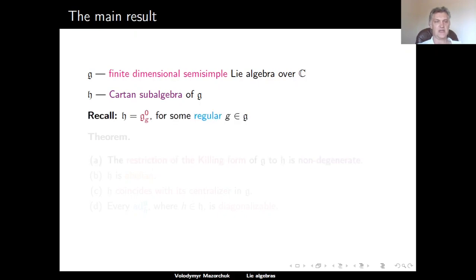Recall from the previous lecture that we already know that the Lie Algebra H coincides with the set of all elements in G which are killed by a high enough power of the adjoint operator associated to some regular element of G.